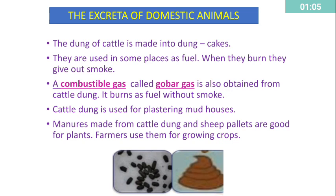The excreta of domestic animals — the dung of cattle is made into dung cakes and used in some places as fuel. When they burn, they give out smoke. A combustible gas called gobar gas is also obtained from cattle dung; it burns as fuel without smoke. Cattle dung is also used for plastering mud houses. Manures made from cattle dung and sheep pellets are good for plants, and farmers use them for growing crops.